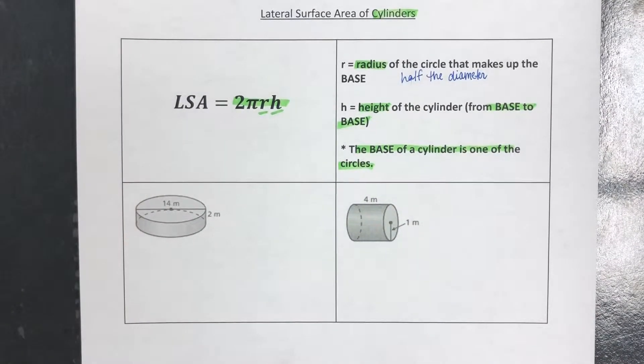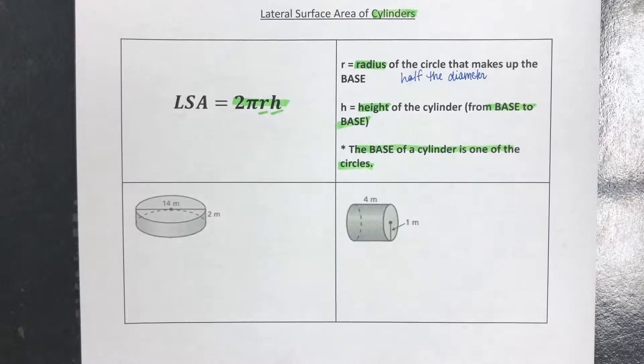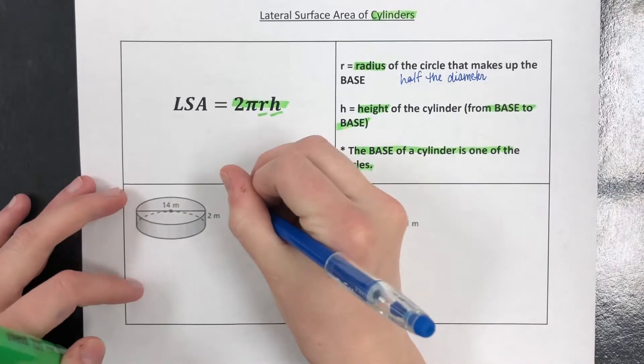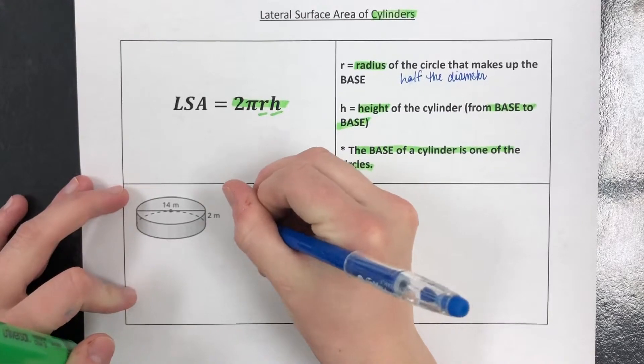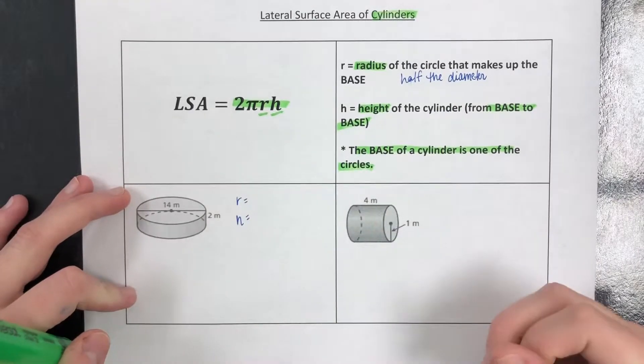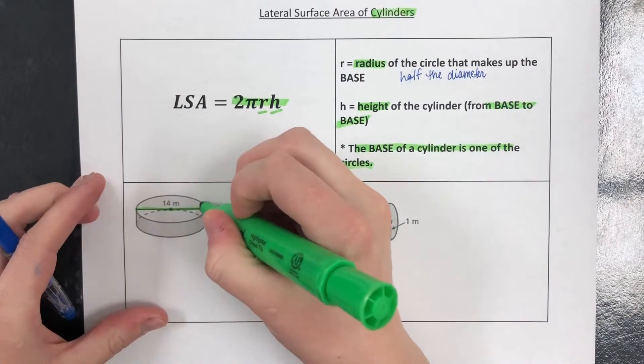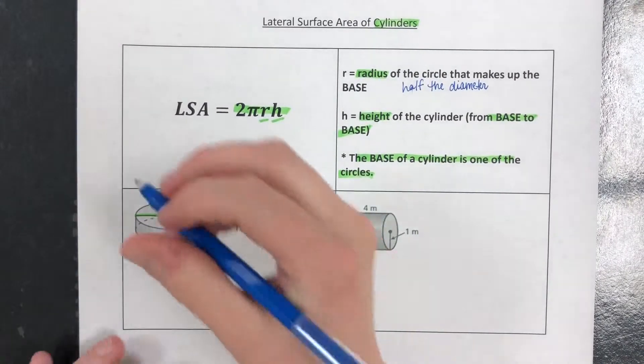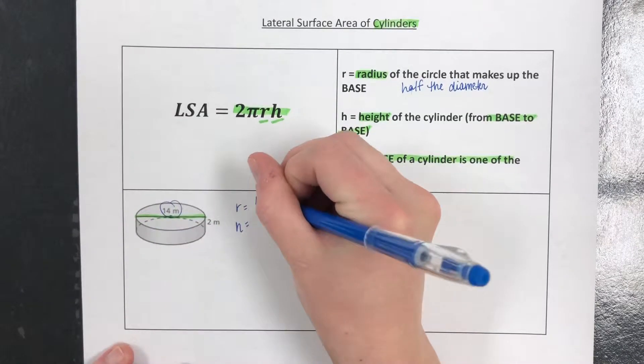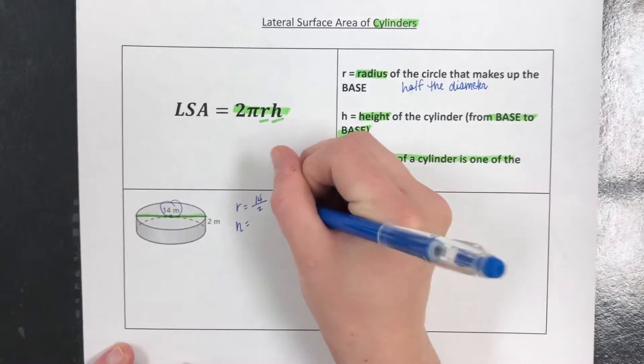So with total surface area it's the same with lateral. There's two things we need: we need the radius and we need the height. This time our radius has been given to us. We look at this circle, we see oh that's not the radius, that's actually the diameter.